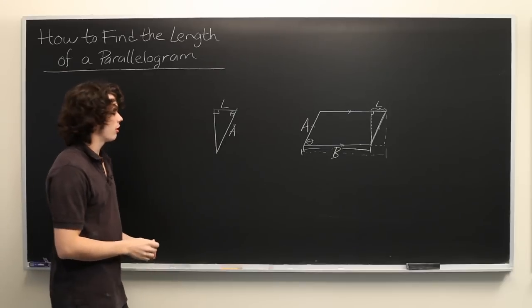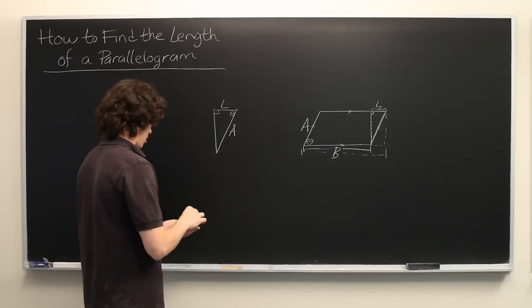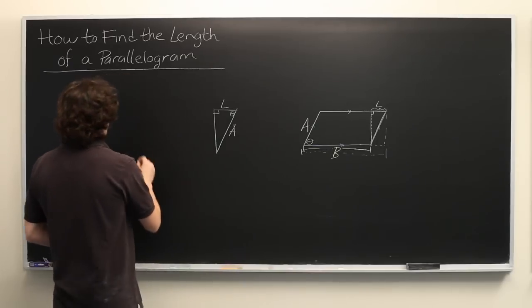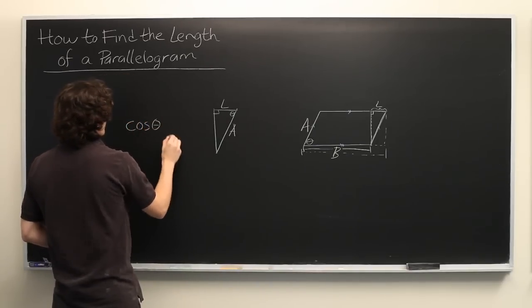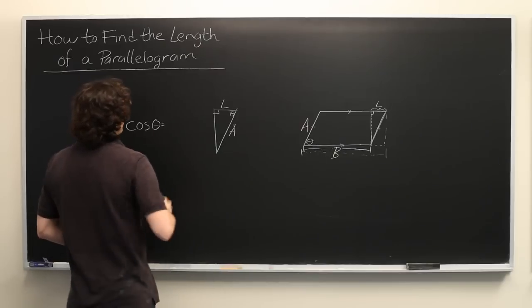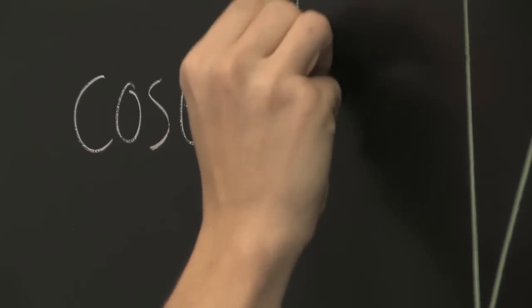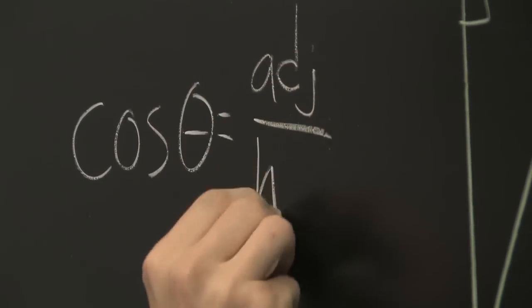We can use simple trigonometry to determine the answer. Recall that the cosine of theta is equal to the adjacent leg over the hypotenuse.